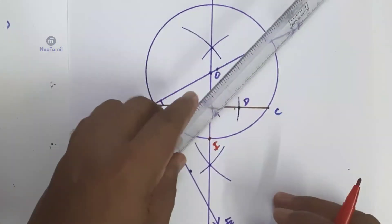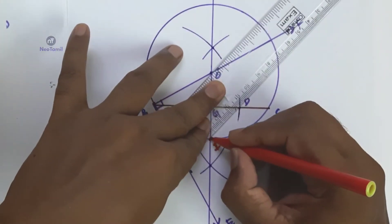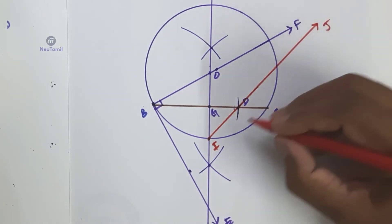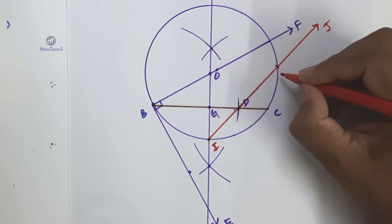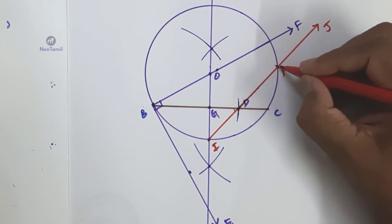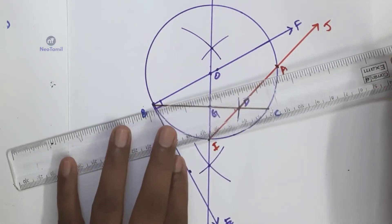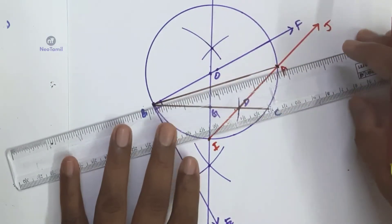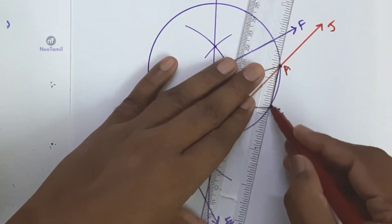Now, I and D are joined. Join ID and extend the ray up to the circumference of the circle — this point on the circumference is J, then extended further to the top vertex A. Join A to B and join A to C. Now the triangle ABC is complete.